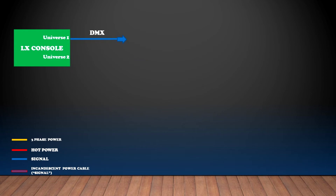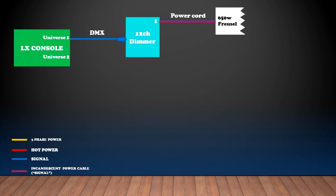Alrighty, let me break it down for you now. As you can see here, the green box represents our lighting console. Now we want to run the signal in order for it to communicate with everything else. So we run a DMX cable, represented by our blue line, out to our dimmer. Now in order for the dimmer to talk to the incandescent light, we simply plug in the light's power cable into the dimmer — we plug it into socket number one. So after the console is patched in and you bring fader number one up along with your master fader, it will bring up the intensity of that light.